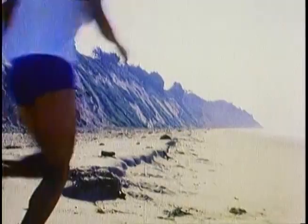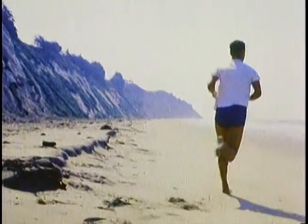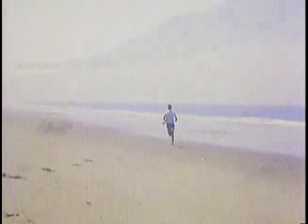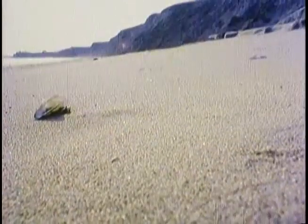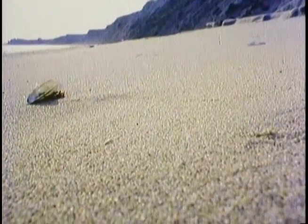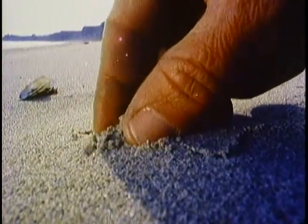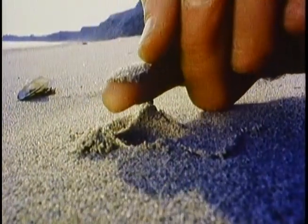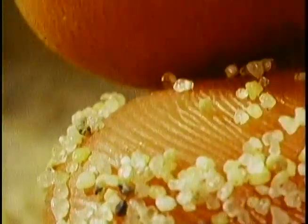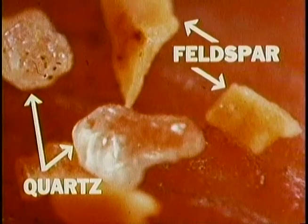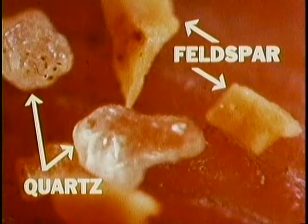Beaches are composed of whatever loose material is available. This California beach is made of light-colored sand, but what is the sand composed of? Tiny grains of quartz and feldspar — the two most common minerals found in solid rock.